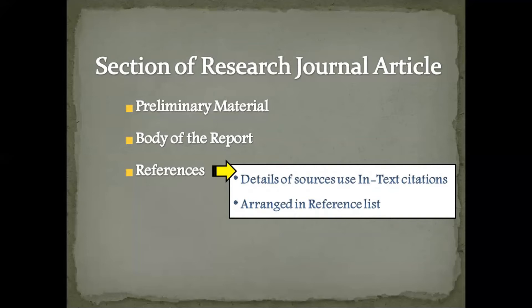Lastly, references are the information provided at the end of the research report and contain all the detailed information about the sources used in in-text citations. The list of detailed information arranged alphabetically by surname is referred to as the reference list. These are the various sections that are present in any research journal article.